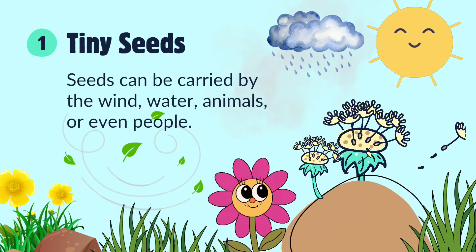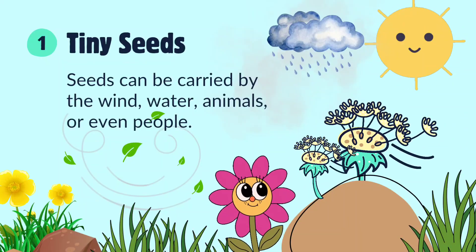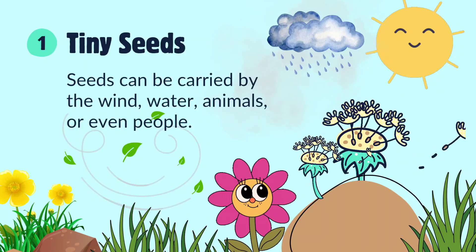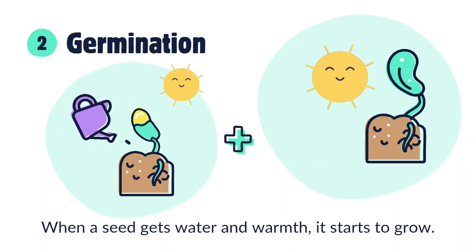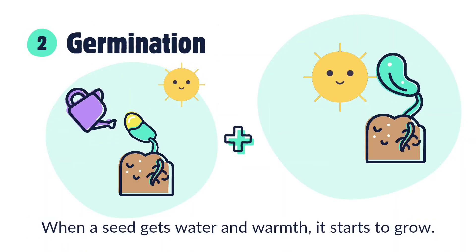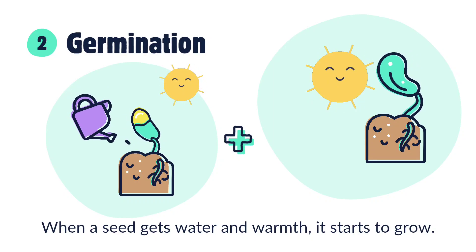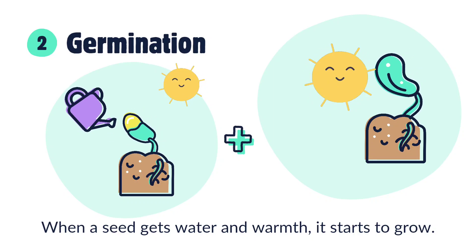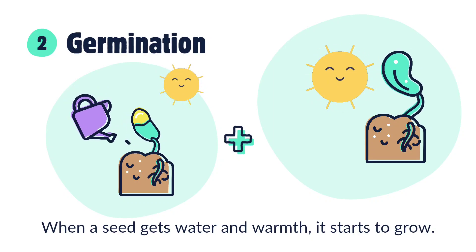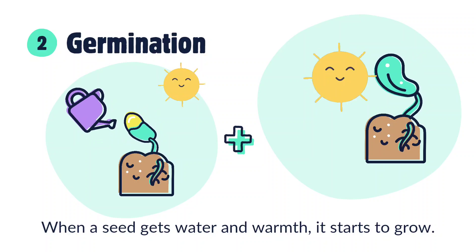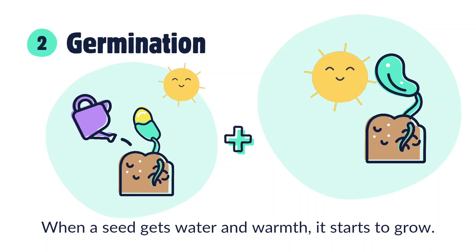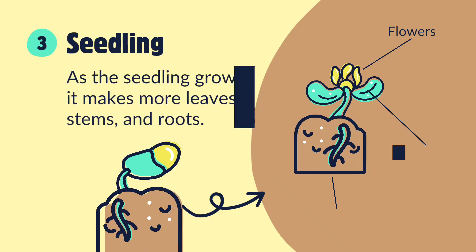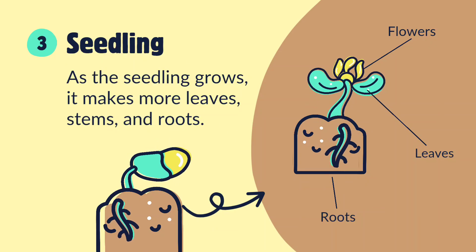Every plant starts from a tiny little seed. This seed is placed in the soil, where it gets water, air, and sunlight. With time, the seed begins to grow. When it gets enough water and warmth, something magical happens. A tiny baby plant comes out of the seed. This step is called germination. The baby plant is called a sprout or seedling.